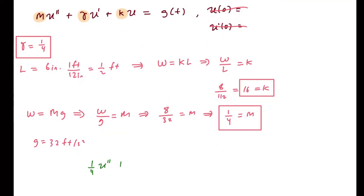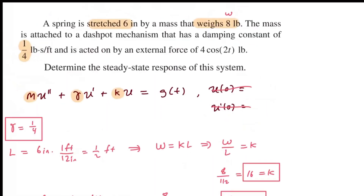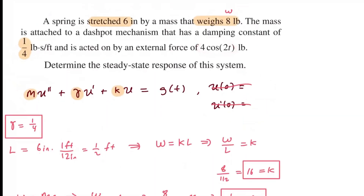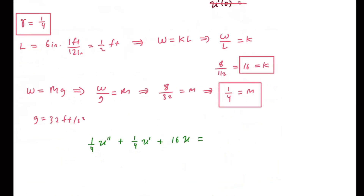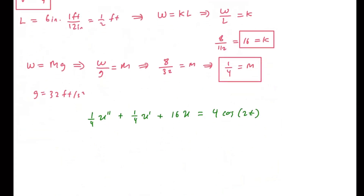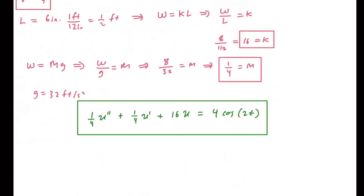Plugging all of these into our differential equation, we're modeling the following: one-fourth u double prime plus one-fourth u prime plus 16 u equals g of t, which represents the external force. The external force is four cosine of 2t, so we have one-fourth u double prime plus one-fourth u prime plus 16 u equals four cosine of 2t. No initial conditions are given, which are not necessary in this problem.